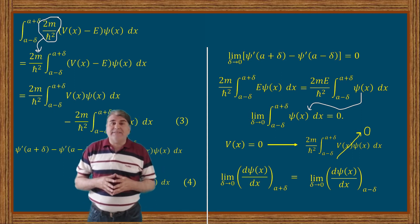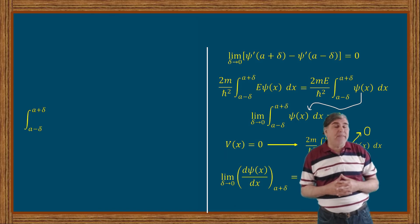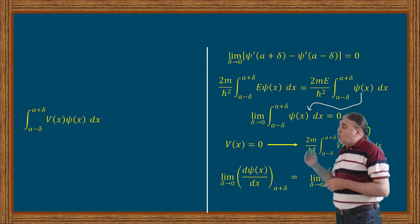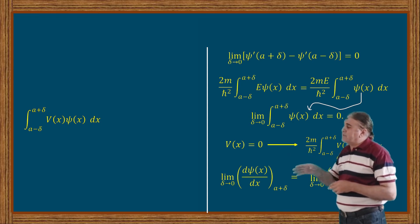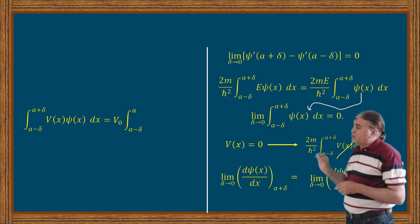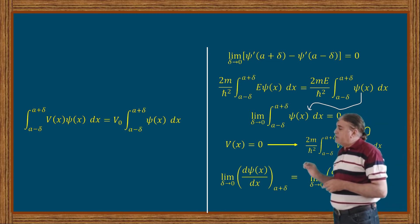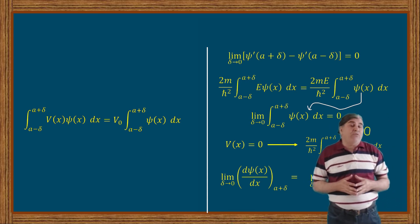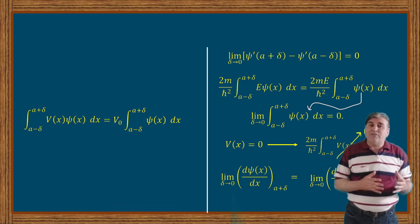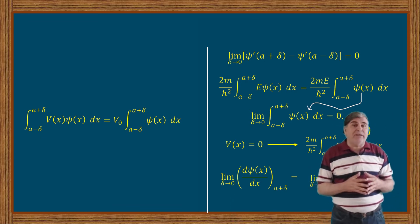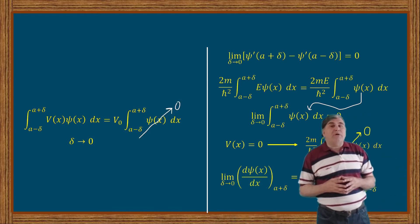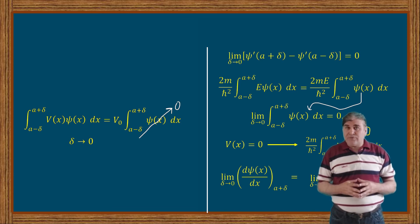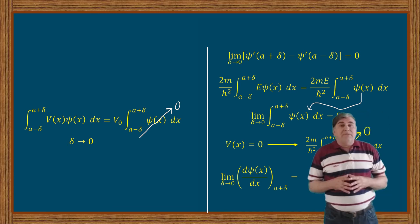On the other hand, if the potential V(x) is a constant independent of position, then the first term in equation 4 can be written as the integral from (a − δ) to (a + δ) of V(x)ψ(x) dx, which equals V₀ times the integral of ψ(x) dx. Again invoking the result of the first condition that the wave function must always be continuous everywhere, equation 4 holds true for a smooth or constant potential as well. That is, the derivative of the wave function is continuous everywhere for a constant potential.